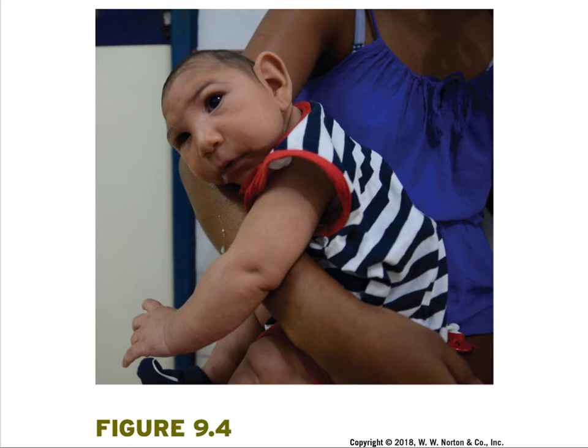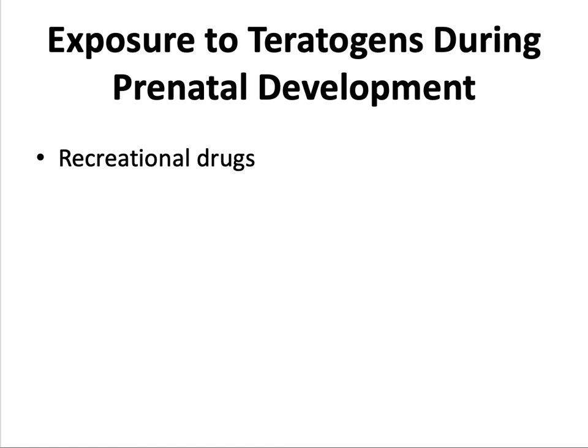This child was born with the Zika virus, which was transmissible by mosquitoes and was primarily around South America a few years back. This condition results in a significantly smaller head than expected, often due to abnormal brain development. The use of recreational drugs such as opiates, cocaine, or cannabis during pregnancy can also affect a child's development. Premature birth and other complications have been associated with the use of all these drugs during pregnancy.